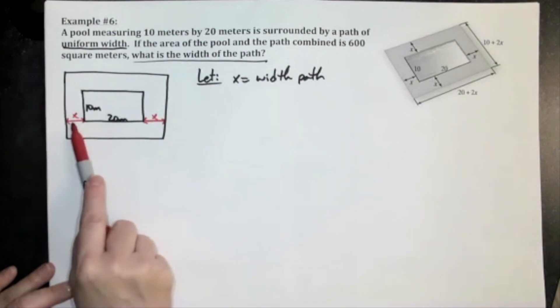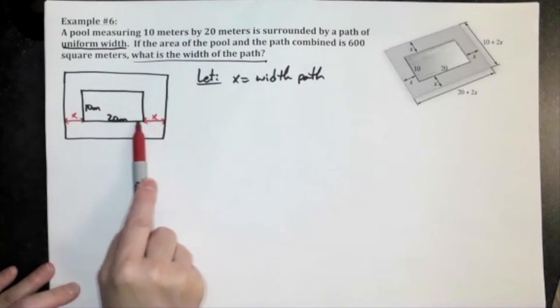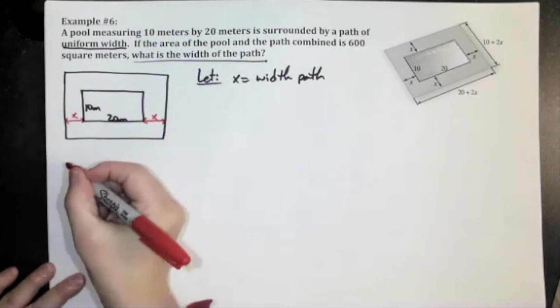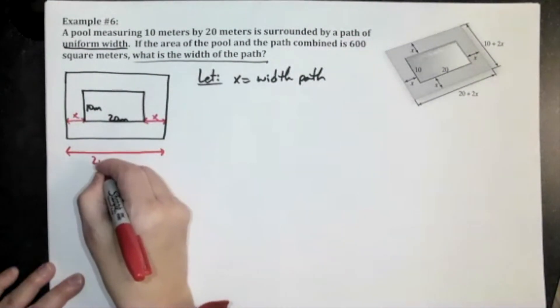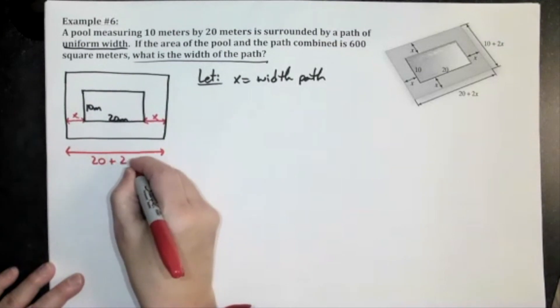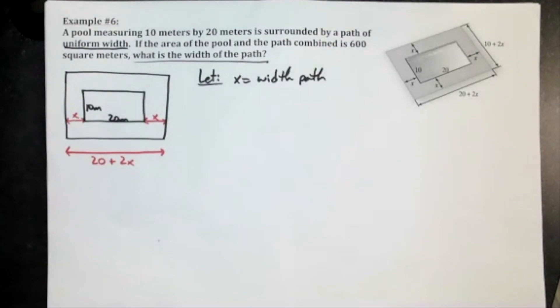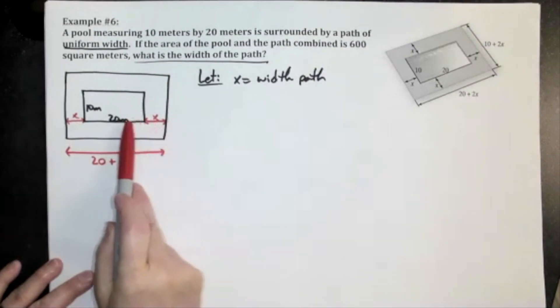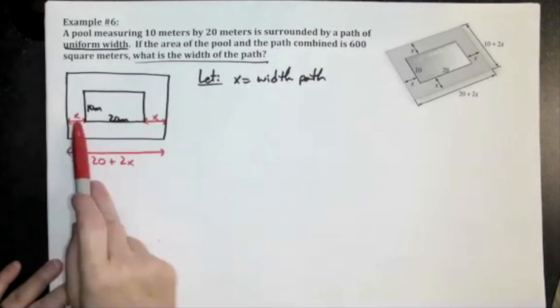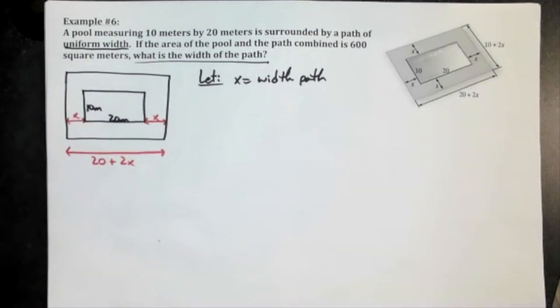20 plus x plus x will be the distance all the way across, so the distance all the way across is going to be 20 plus 2x. And I set it next to, I did my x's right there horizontally with that 20 meter, so it's just really easy to look straight across and see what it is.